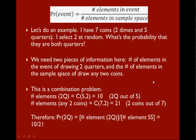Now we divide this into two different problems. We find the number of elements in drawing 2 quarters, which is a combination, 5 choose 2, and there's 10 ways. This is a combination problem because there's no distinction between the two coins.